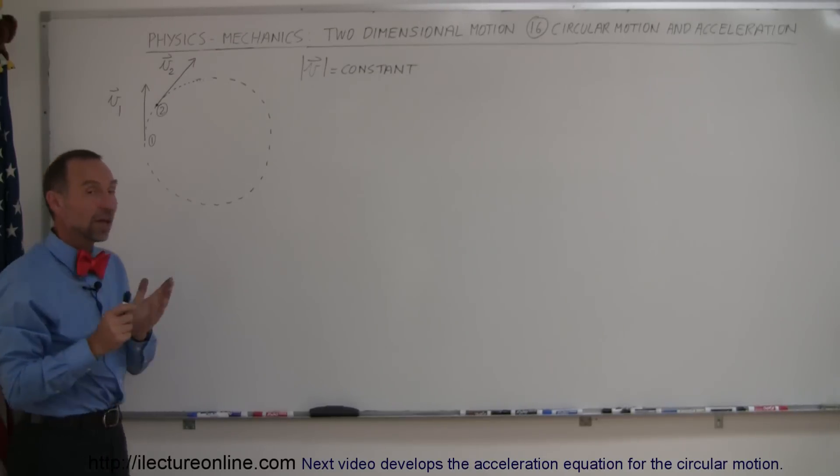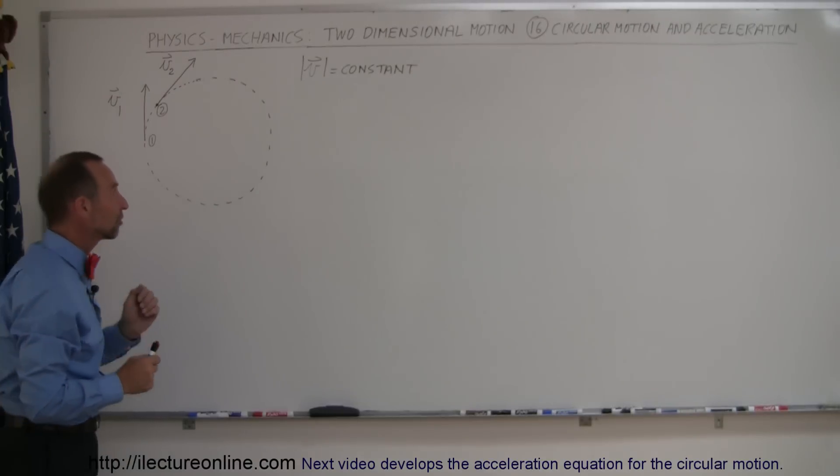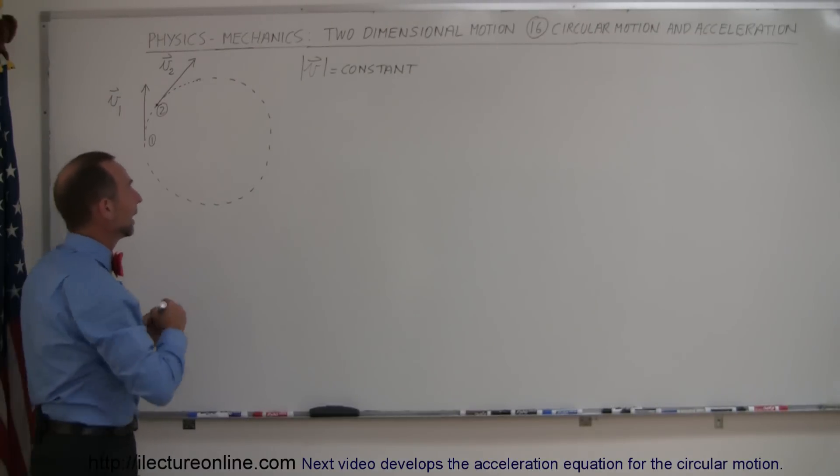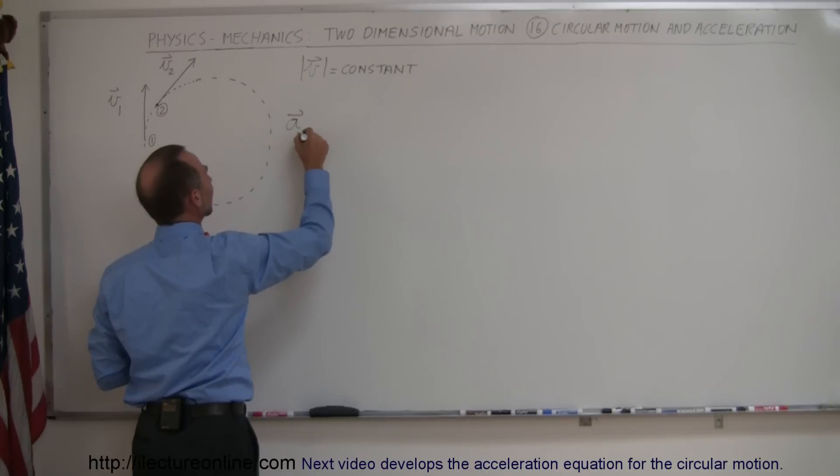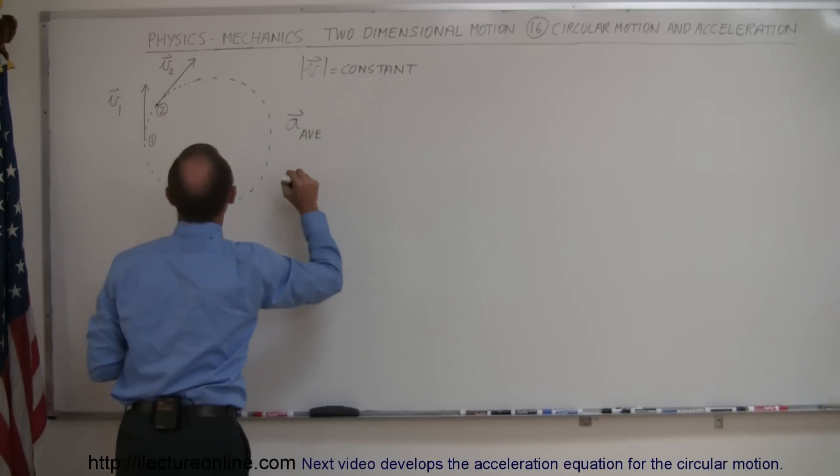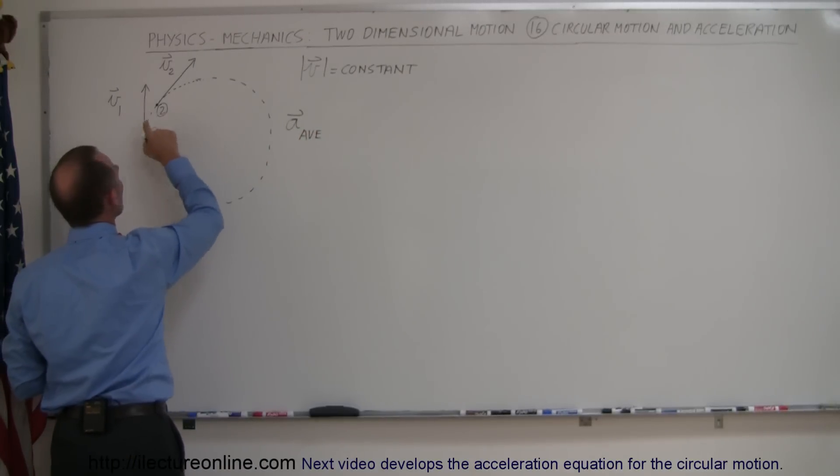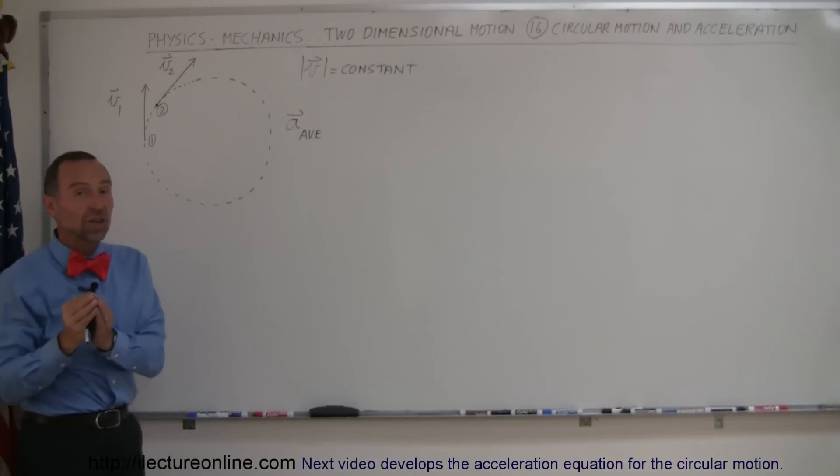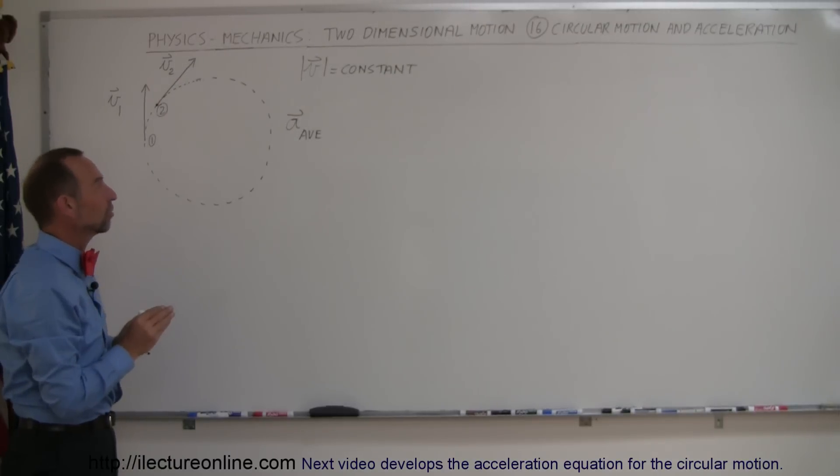Well notice that velocity is a vector quantity, acceleration is a vector quantity, and since we want to know the acceleration, let's say we want to find the average acceleration between going from point 1 to point 2, since the direction changes there must be acceleration.